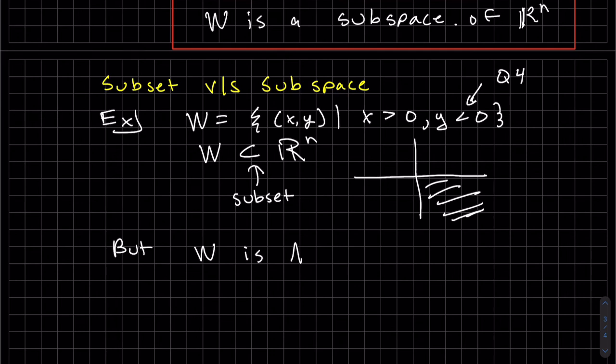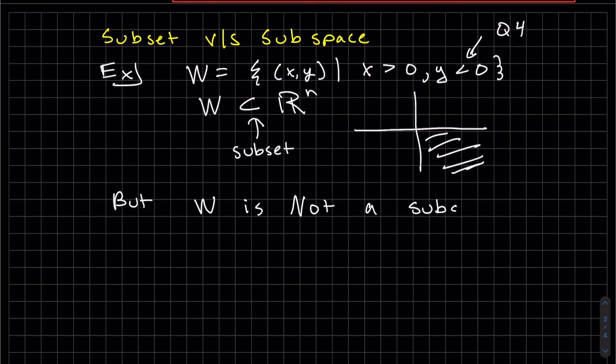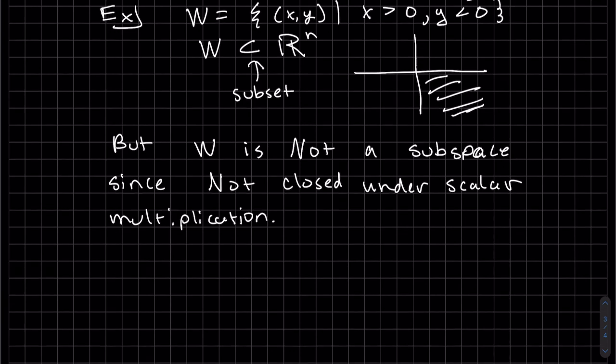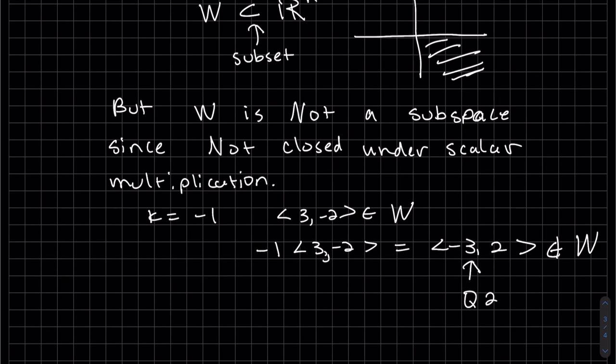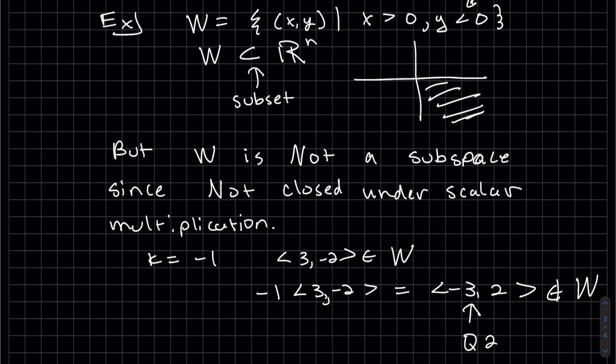It's not a subspace. W is not a subspace since it's not closed under scalar multiplication. I'll show you a counterexample. You've already seen this example in the last video. Similar subset. But if K is negative 1, and we pick 3, minus 2 in quadrant 4, subset of W, it should be closed under scalar multiplication. If you can multiply any scalar and it remains in that set. But that is clearly not an element of W. That's in quadrant 2, not 4. So there's a counterexample to show you that W is not a subspace. It is not closed under scalar multiplication. Okay, good. Have a nice day.